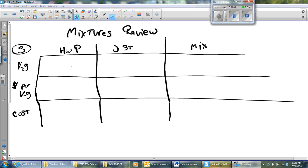The Hawaiian pineapple we don't know how many kilograms, so I'll call that H. We don't know how many Jamaican strawberries we need so I'll call that J. The mix we're trying to make is 300 kilograms. We've got our first equation: H plus J equals 300.